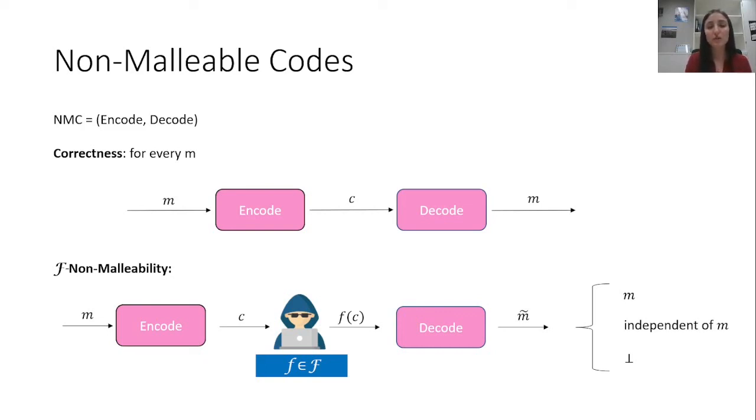Of course, we would like to prove f-non-malleability for families as large as possible. Unfortunately, this was proven to be impossible, and in particular, it's impossible to have a non-malleable code against arbitrary probabilistic polynomial time functions. Therefore, it's interesting to understand for which families one can have non-malleability and under which assumptions.